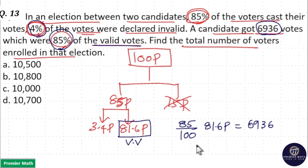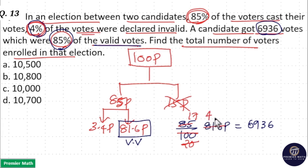We need to find what 100 parts equals. Since 5 goes 20 times into 100 and 5 goes 17 times into 85, we divide 81.6 by 20. Working through the division: 2 goes 4 times into 8, 2 goes 8 times into 16, and 0.6 divided by 10 gives 4.08. So 81.6 divided by 20 equals 4.08.